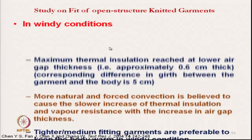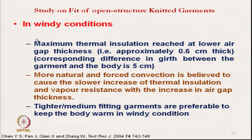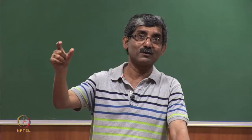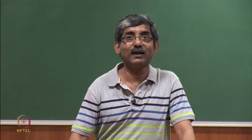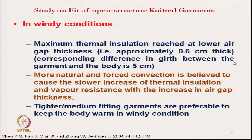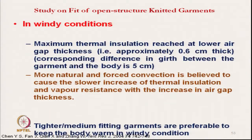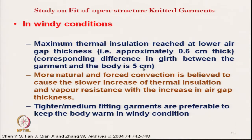In windy conditions, the air gap must be reduced — from loose fit to a medium fit garment. Typically a 0.6 centimeter effective gap is needed, reducing the total girth by approximately 2 centimeters from 7.5 to about 5 centimeters. A 2.5 centimeter reduction in size is recommended in windy conditions. More natural and forced convection causes slower increase of thermal insulation, so tight or medium fit garments are preferable to keep the body warm in windy conditions.